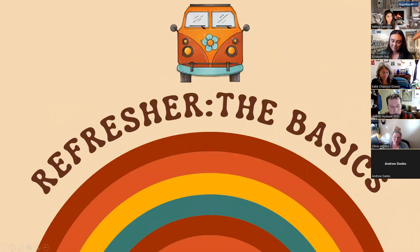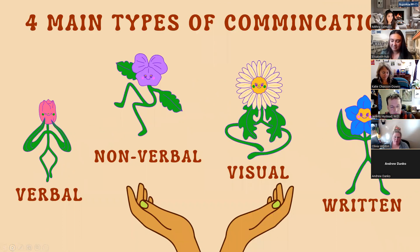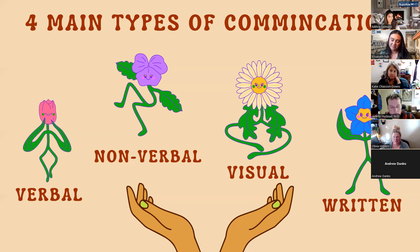Just as a refresher, some basics on communication. There are four main types: verbal — what I'm doing now, talking; non-verbal — body language, tone, inflection, facial expressions; visual — like a PowerPoint or visual aids; and written communication. You also have informal and formal processes, and there are 15-plus different subcategories, so communication is very intricate.